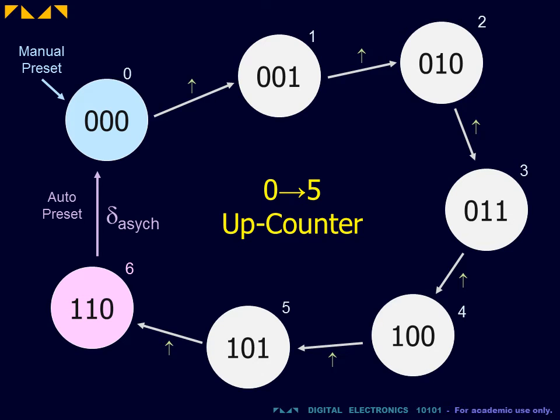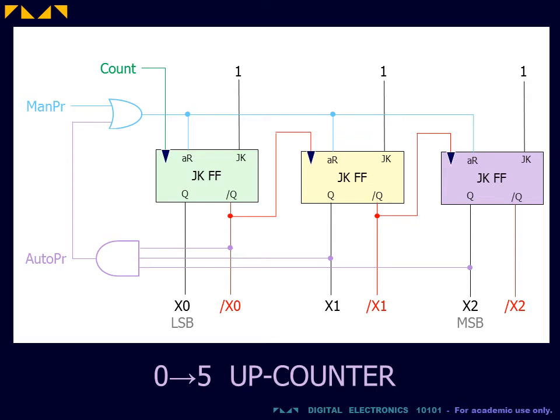This was achieved by doing a forced auto preset back to the initial counting state. This was implemented by first detecting the counter state at which the auto preset was to occur, and then using this auto preset to trigger an asynchronous reset of the counter.